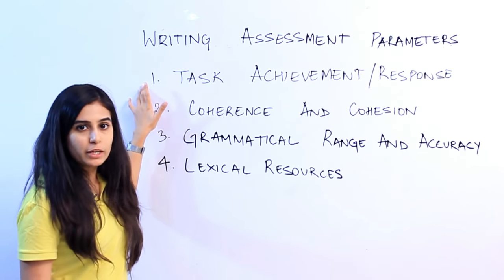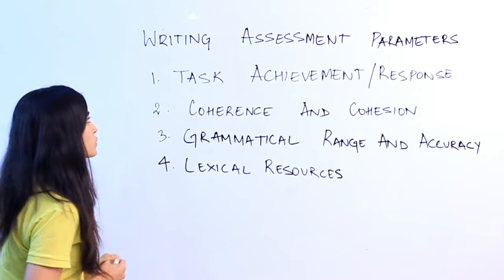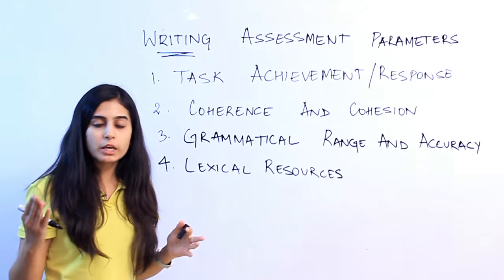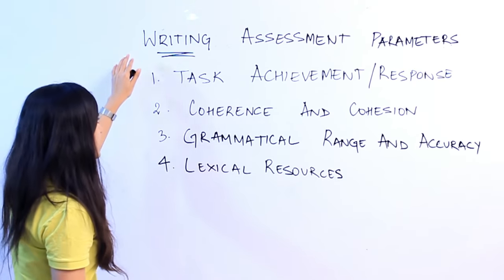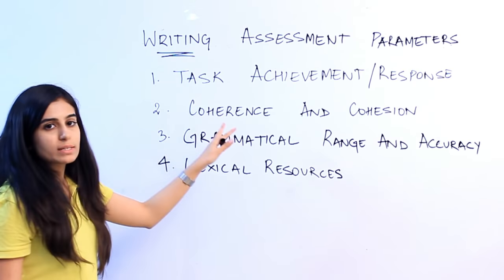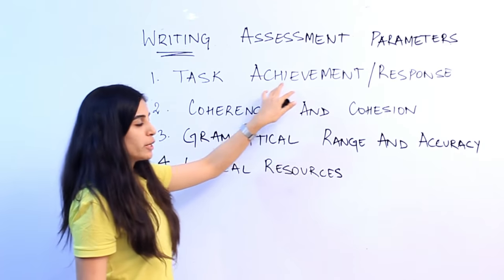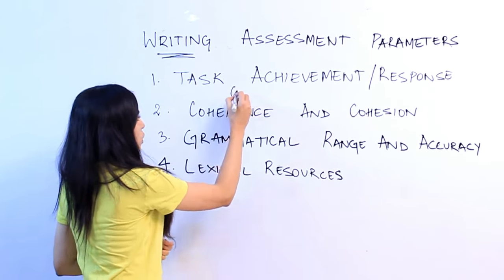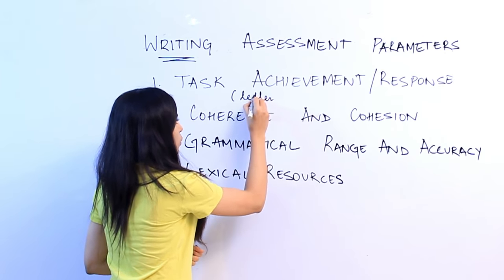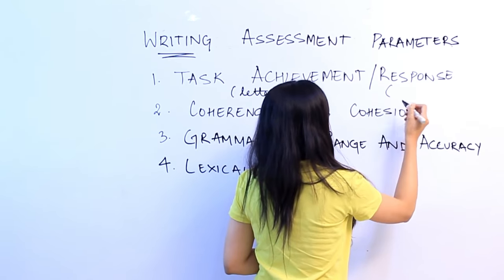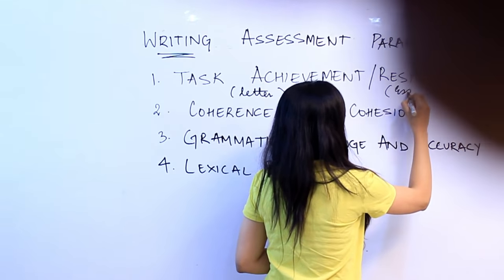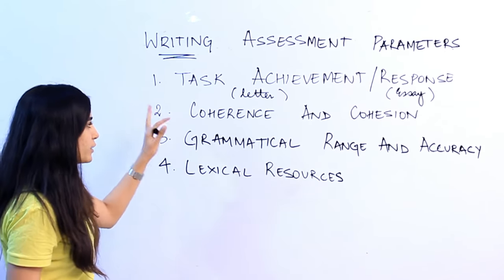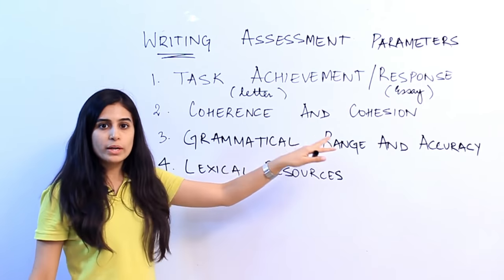The first parameter on which your writing is assessed — we are talking particularly about writing today; speaking will be dealt with later. In writing, what are you assessed on? Task achievement or task response. Task achievement applies to the letter, whereas task response applies to the essay. There is a slight difference between the two, which we will deal with later. The second parameter is coherence and cohesion.